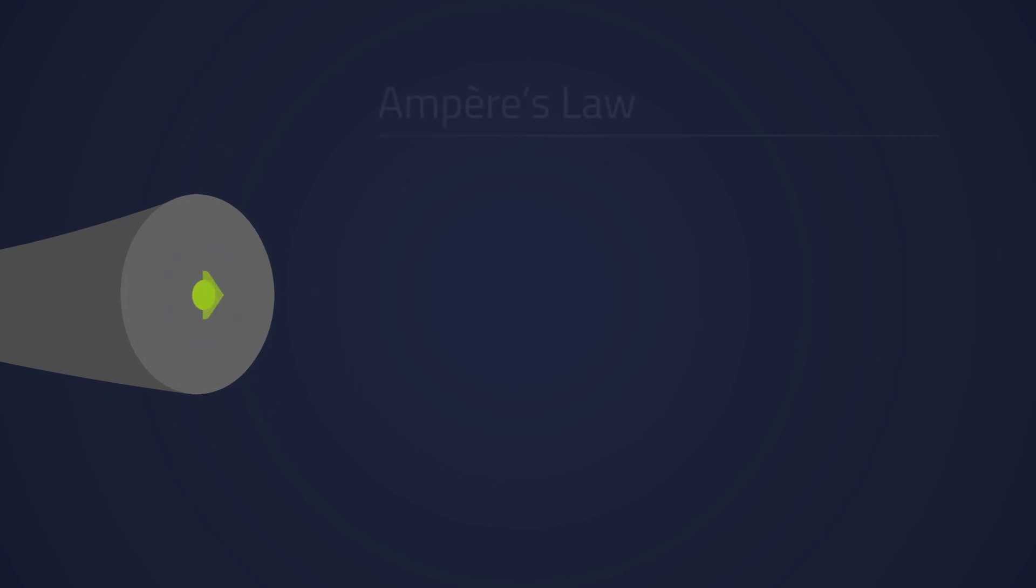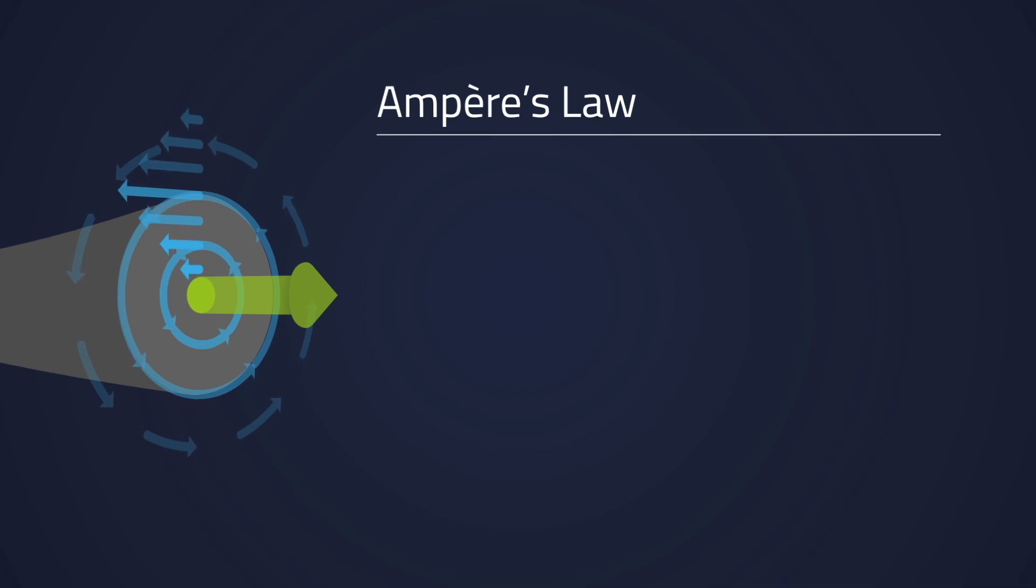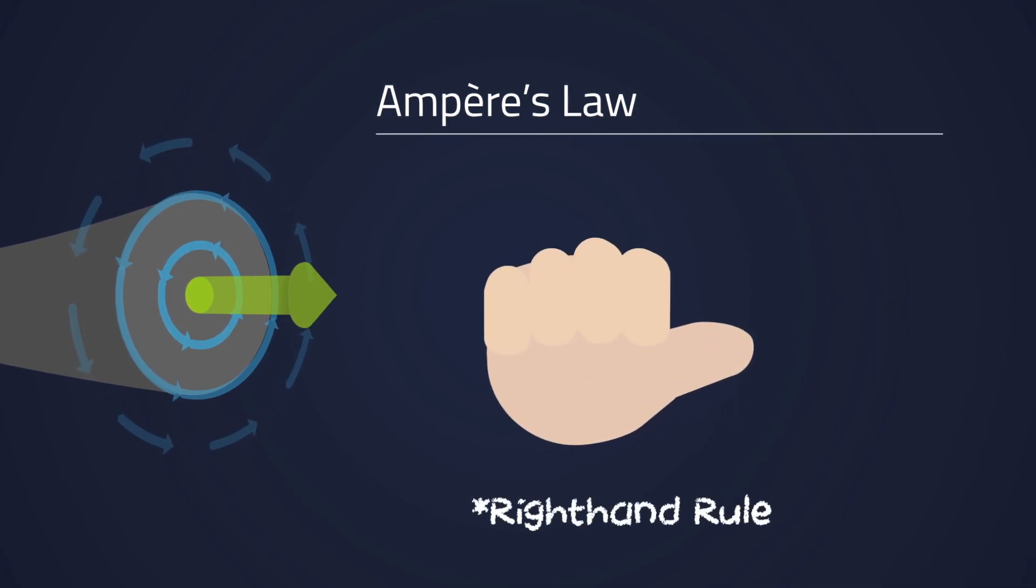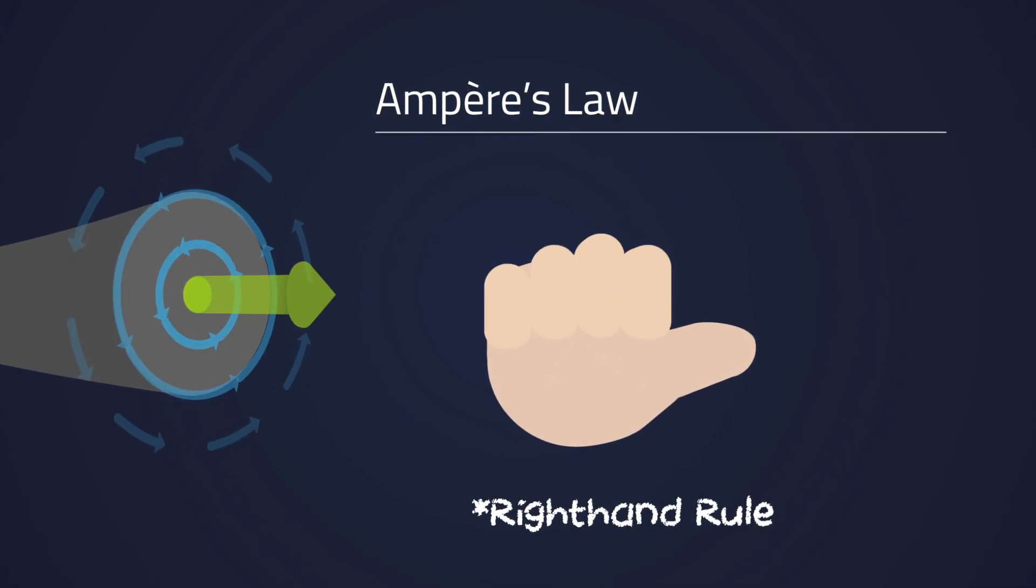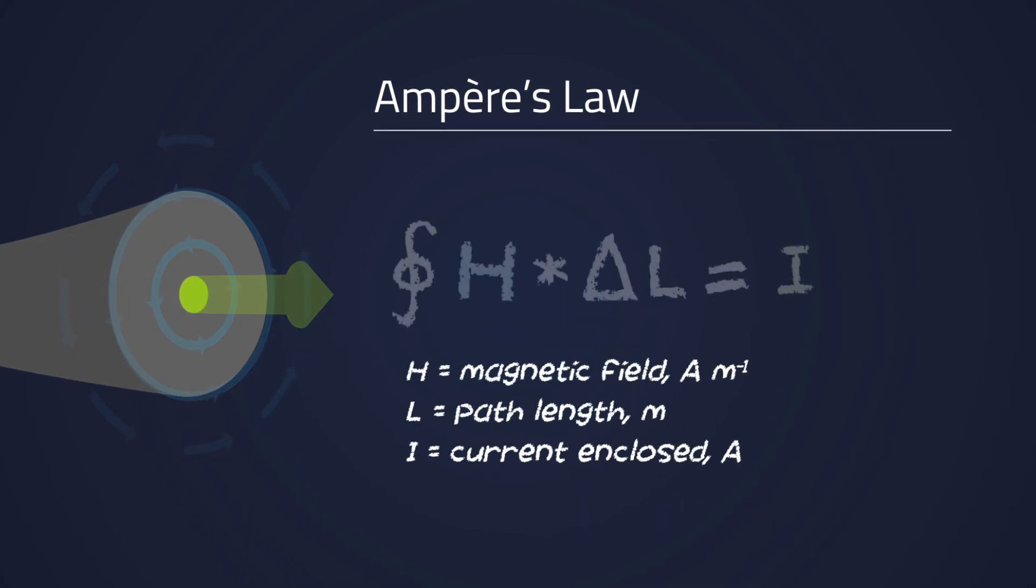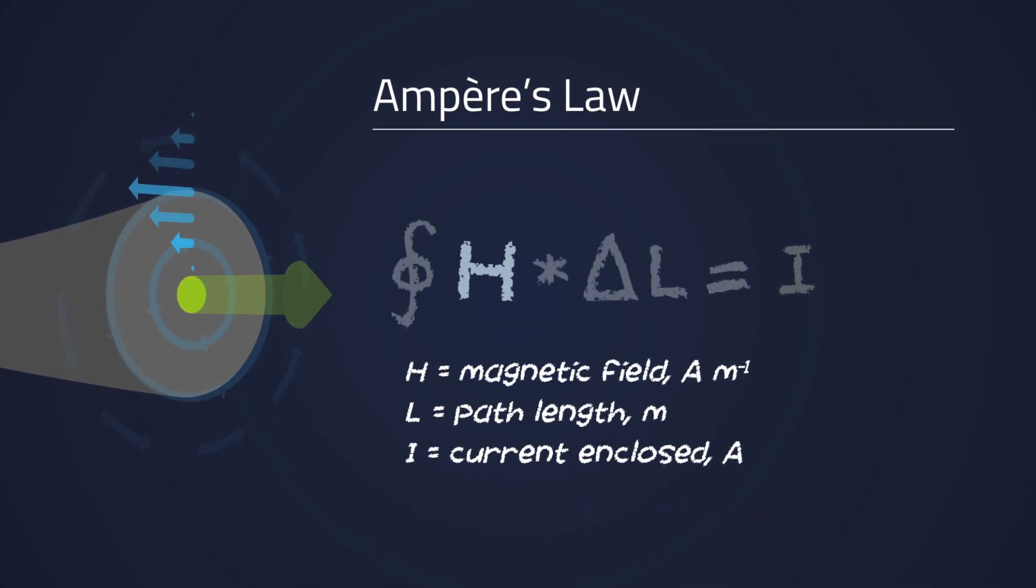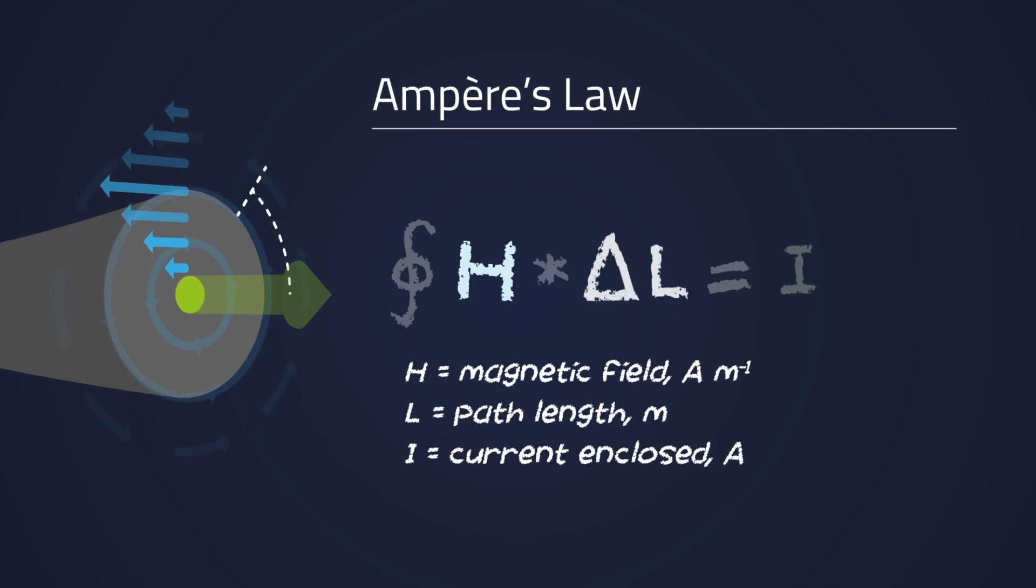Thanks to Ampère's experimental work, we are able to calculate the relation between the current through a conductor and the magnetic field in the space around the conductor. This relationship is known as Ampère's law. The line integral of the magnetic field vector around a single closed path is equal to the current enclosed.